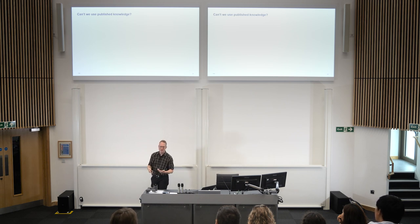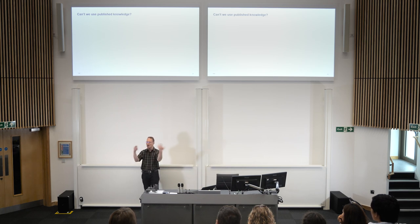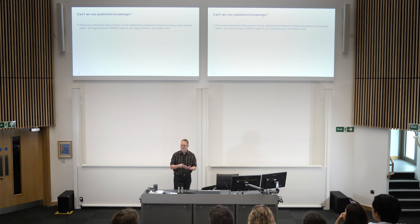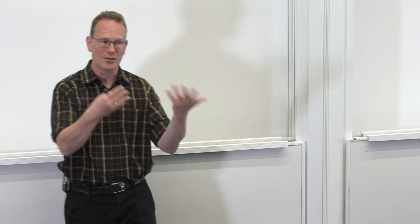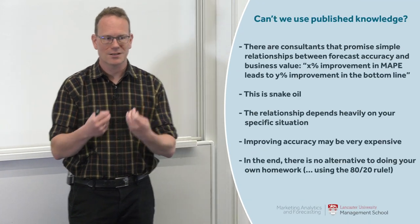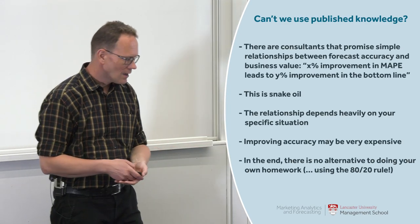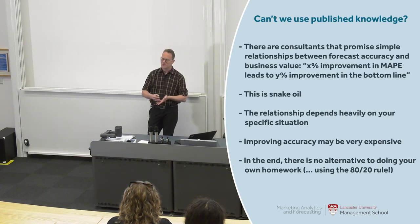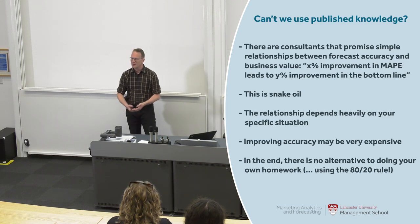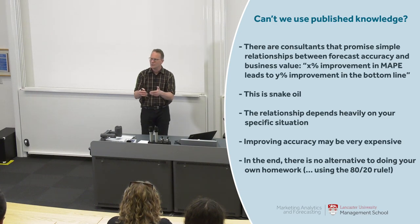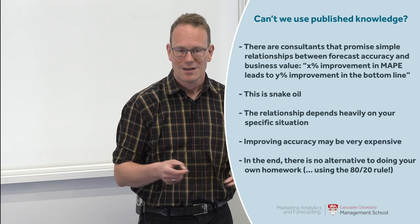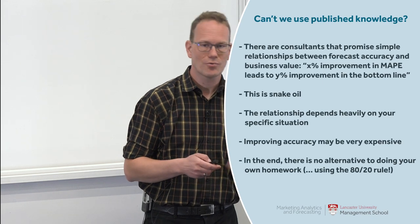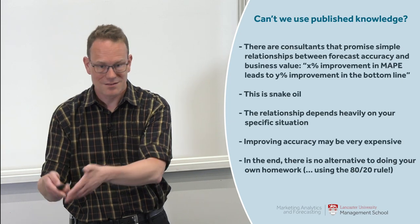One thing that often comes up: can't we use published knowledge about the relationship between accuracy and business value? There are people who will say there is a straightforward relationship — reduce the MAPE by X percent and your business bottom line will go up by Y percent. I would say that is snake oil and completely worthless, because this relationship hugely depends on your particular situation due to logistical constraints. Also, improving accuracy may be expensive: it's easy if you're starting from an immature process, but if you already have a good process, all the low-hanging fruit have been picked. At some point, the impact on the bottom line may be negative because you spent so much on improving forecast accuracy that the resulting business value didn't pay for it.